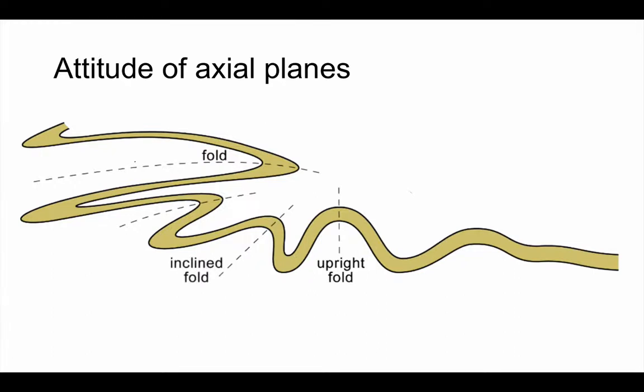An inclined fold, where the axial plane is at an angle to the vertical, often found in asymmetrical folds, but not always. If we keep tilting these beds, usually as a result of more compression, we can get what we call an overturned fold.